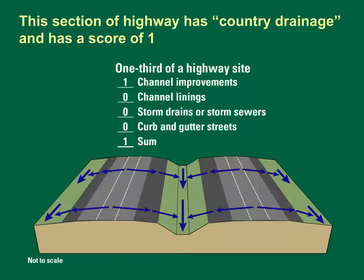This diagram shows a section of highway representing one-third of a highway site with country drainage. As the blue arrows indicate, runoff from the highway flows directly off the pavement into grassy swales in the median and on the shoulders. These swales are identified as having channel improvements because they have been designed as straight stormwater conveyances — straight, deep, wide, and clear of flow obstructions — and drain more than 50% of the drainage area. The other BDF factors are zero, giving this section a total score of one. Three such sections would produce a BDF of three.